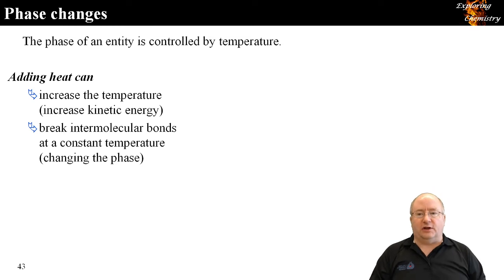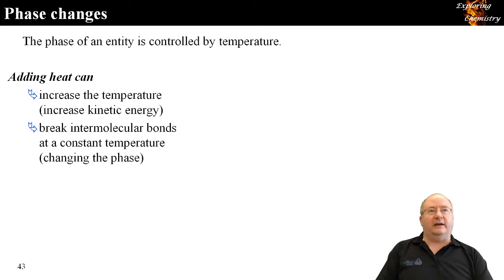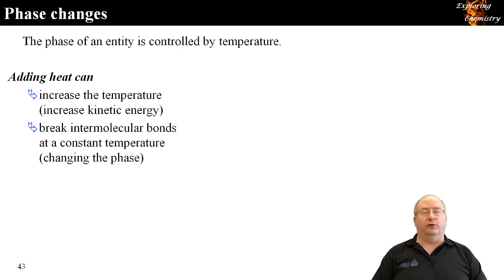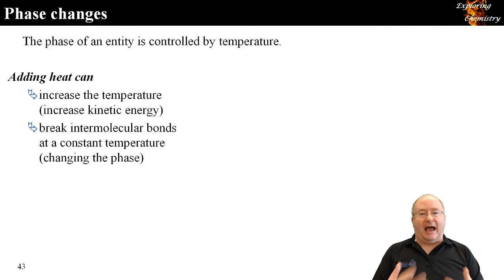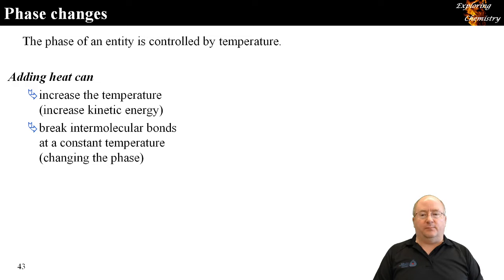Moving on to phase changes — changing phase is another property we observe. It happens when we add or remove heat from a substance. When we add heat, we can either increase the kinetic energy and temperature of the sample, or we can break intermolecular bonds at a constant temperature — that's the phase change we're looking at here.